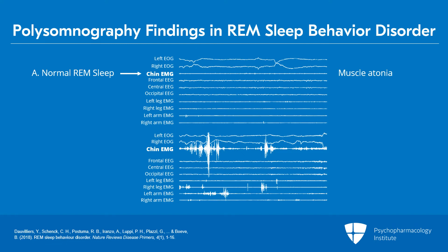It's an active muscle paralysis generated in the brainstem. However, in contrast, in panel B, if you look at the chin EMG, you see increased muscle tone and phasic twitching. This is abnormal, and this is what's found with REM sleep behavior disorder. It's really easy to pick up the loss of REM atonia with RBD in contrast to normal REM sleep and normal REM sleep atonia.